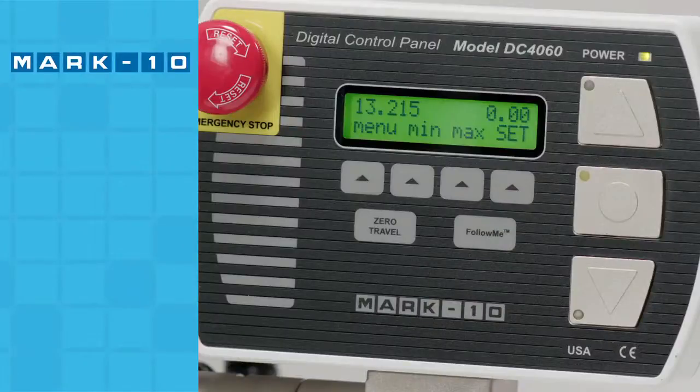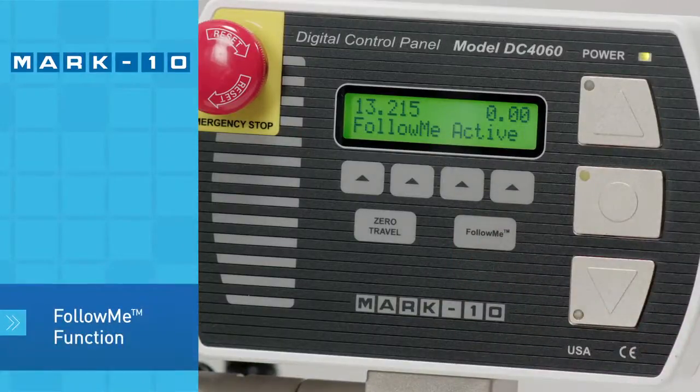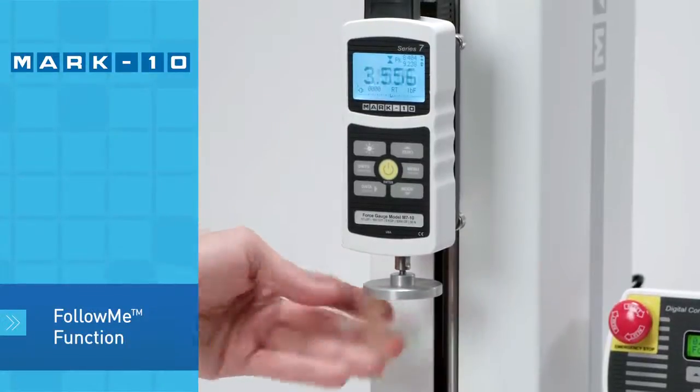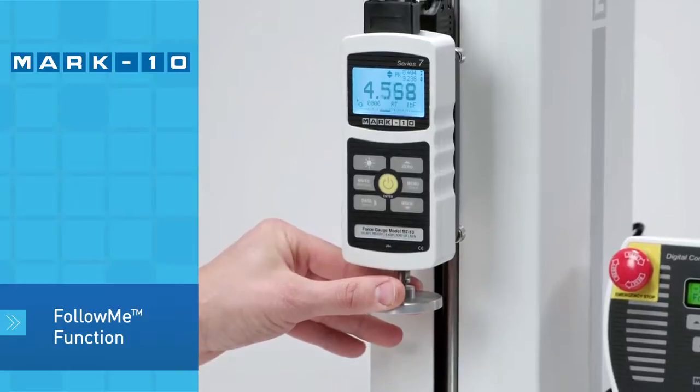Cross-head positioning prior to or after a test is easy with the unique follow-me function. Simply push and pull on the force gauge or load cell to move the cross-head. The greater the force, the faster the speed.